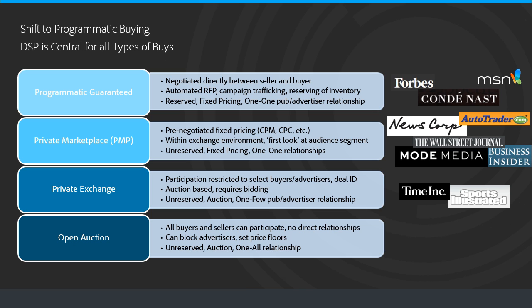Private exchanges are exchanges where participation is restricted to select buyers and advertisers — also called an invitation-only exchange. It's auction-based, so it requires bidding. It's a one-to-few publisher-to-advertiser relationship: a publisher may only be comfortable selling to four or five advertisers, so they can invite only that limited, select set to participate in the exchange and bid. It's unreserved inventory in an auction environment, where the highest bidder wins the impression. Time, for example, makes their inventory available through this type of private exchange, with publisher sites including Time and Sports Illustrated.